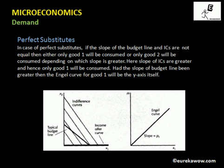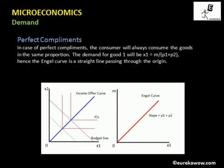For perfect complements, the consumer will always consume the goods in the same proportion. For example, with four left shoes and three right shoes, the consumer will consume three of each — there is no point consuming four right shoes and three left shoes. So the consumer consumes goods in the same proportion, in this case 1:1. For perfect complements, the demand for good one is x1 = m/(p1 + p2), derived from the budget constraint p1*x1 + p2*x2 = m with x1 = x2.